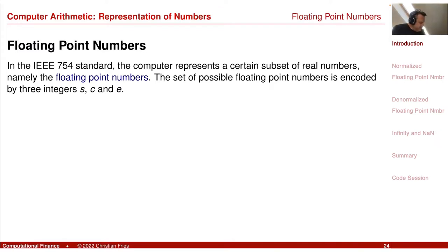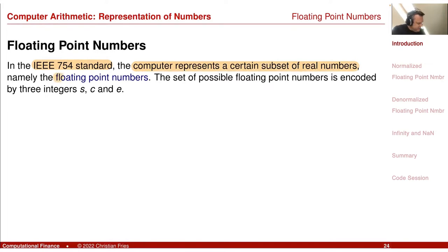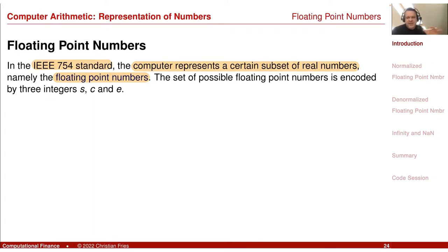We discuss here the IEEE 754 standard. It represents a subset of the real numbers called the floating point numbers. These floating point numbers are encoded by three integers, which I will use throughout the definition. The set of floating point numbers is defined in three steps, and the integers are used sometimes differently.